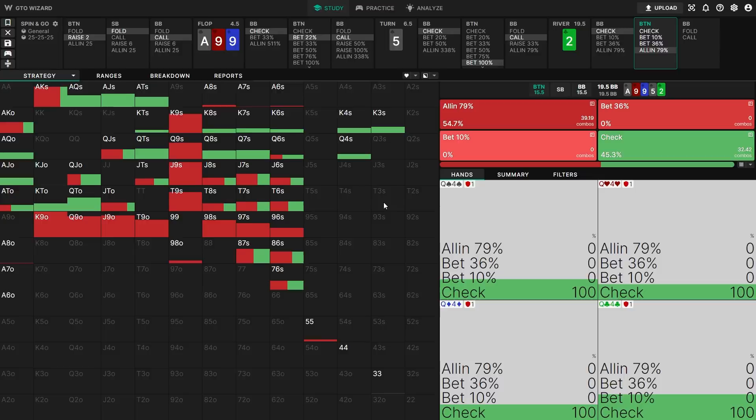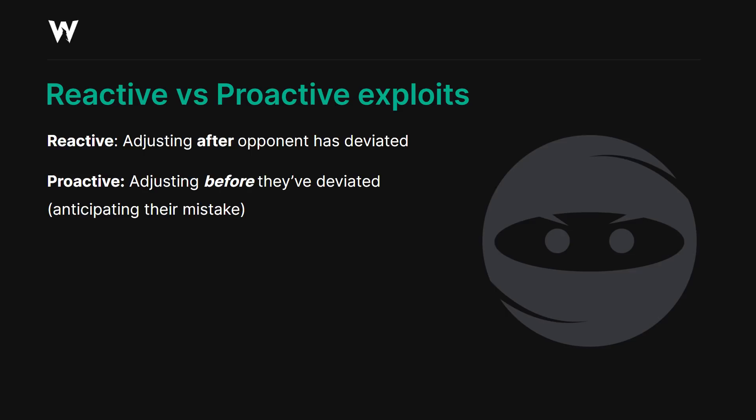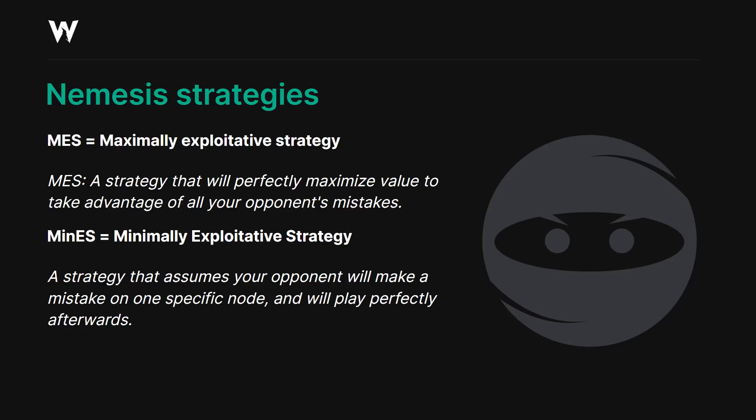Now that we understand some of the basics of exploitation, let's talk about the terminology. There are essentially two main types of exploits: reactive versus proactive exploits. Reactive means adjusting after your opponent has already deviated. Proactive means anticipating their mistake and changing your strategy beforehand. Both types are useful. Let's talk about nemesis strategies. A nemesis strategy is a term from game theory meaning a maximally exploitative strategy — one that will perfectly counter all of your opponent's mistakes throughout the entire game tree.